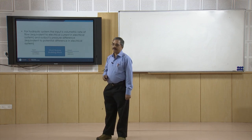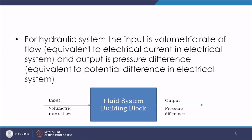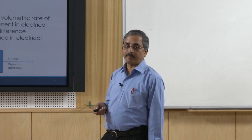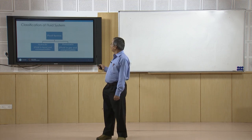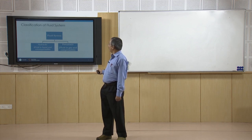In hydraulic systems, the input is volumetric rate of flow, which is equivalent to current in an electrical system, and the output is pressure difference, which is equivalent to potential difference in an electrical system. For these fluid system building blocks, the input is the volumetric rate of flow and the output is the pressure difference. Fluid systems can be classified into two types: hydraulic systems and pneumatic systems.